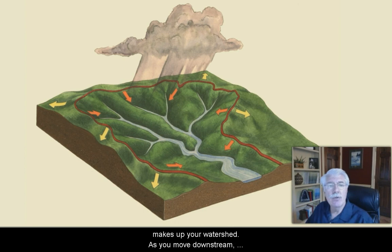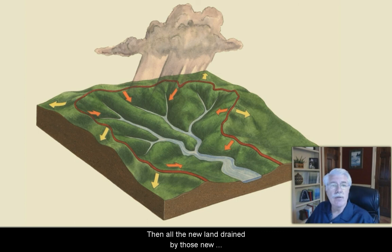The land upstream from you makes up your watershed. As you move downstream, more streams and rivers flow together. Then all the new land drained by those new streams adds to your watershed.